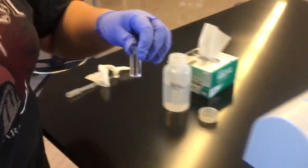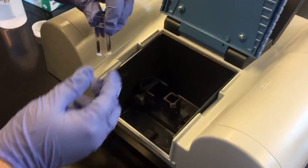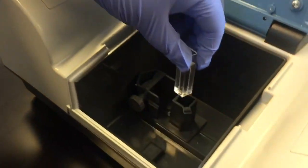Next, you're going to go to your UV spectrometer, lift the lid, and place your cuvette with the arrow pointing to the left.